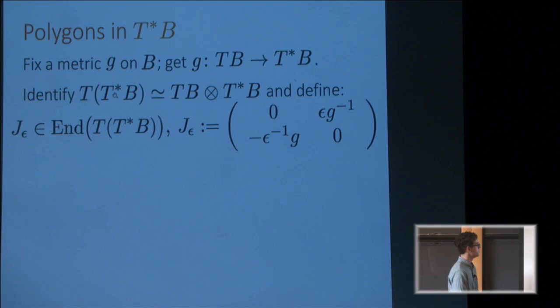We're going to define that by choosing a metric g. We'll use that to identify the tangent bundle of the cotangent bundle as a direct sum of the tangent and cotangent bundles. That should have been an O plus. And we'll define a complex structure on the tangent bundle depending on this parameter epsilon in terms of that decomposition according to this matrix right here. The point is basically that by doing this, as long as epsilon is small, we're making the fibers small relative to the base.